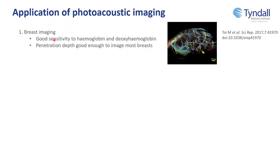One application is breast imaging, because photoacoustic imaging has good sensitivity to hemoglobin and deoxyhemoglobin — you can illuminate at different wavelengths. The breast is also a good target because it's not too big and not too deep; you never need to go past a few centimeters, so the penetration depth is sufficient. Here there's an image of vasculature in a human breast.